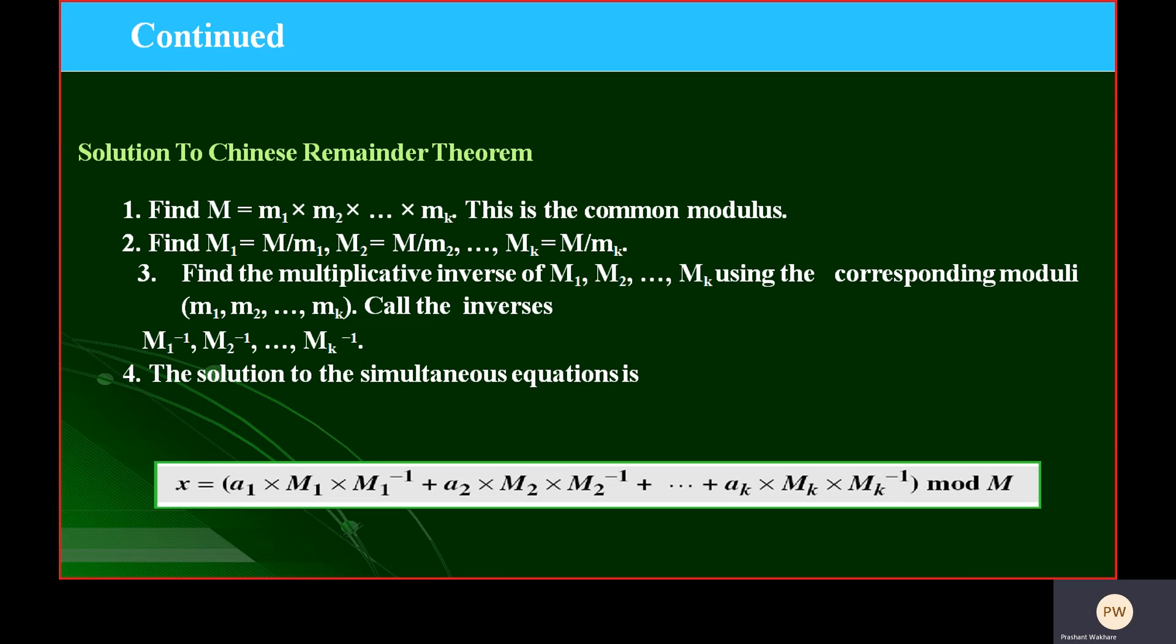In the first step, we have to find the common modulus. It means first we have to find capital M. How we can find capital M? There is small m1, m2, up to mk. We multiply them to get capital M.